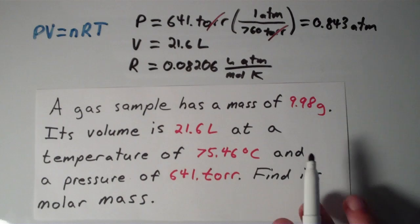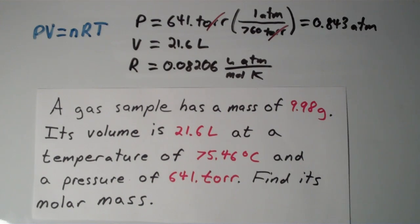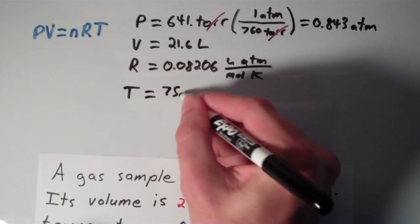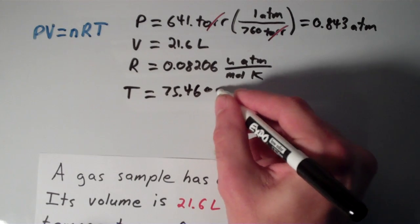So we have the P, the V, the R. Let's see if we can find the T. Yep, sure enough, the temperature is given. That is, T equals 75.46 degrees Celsius.